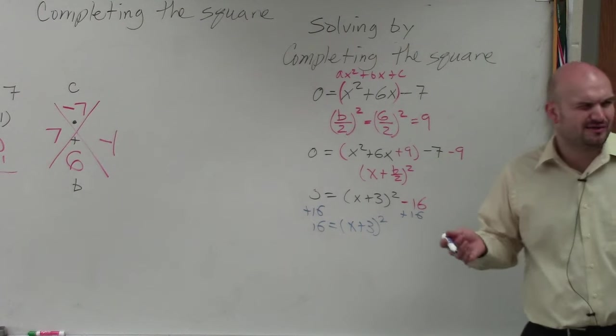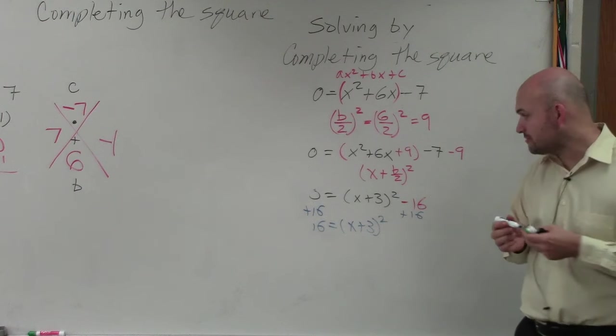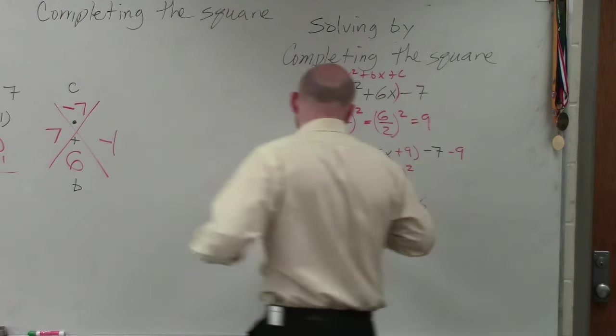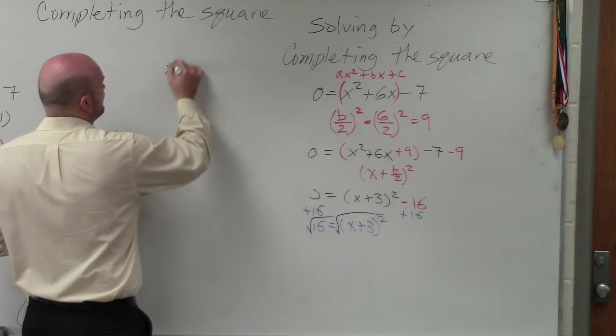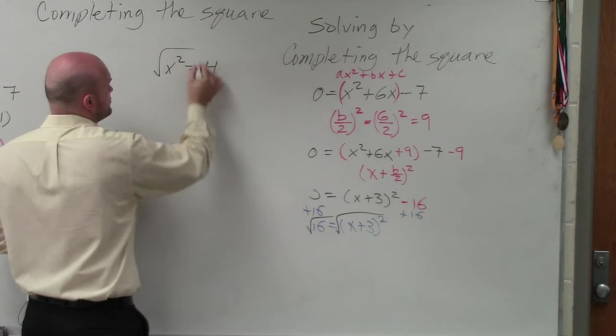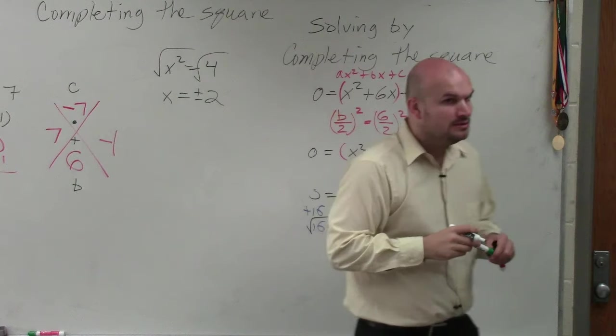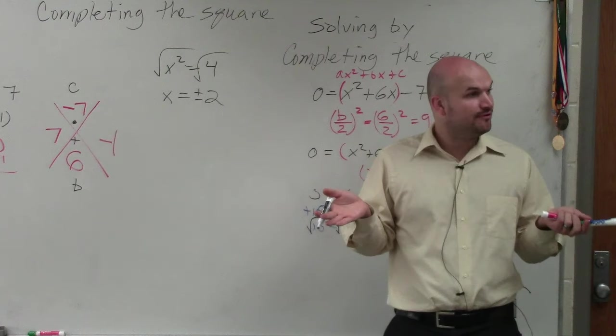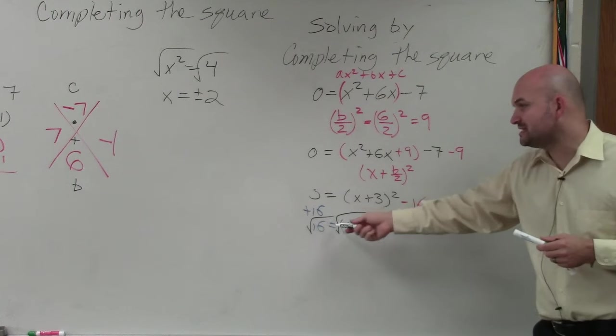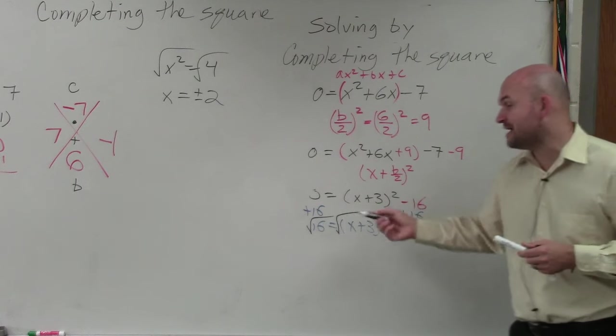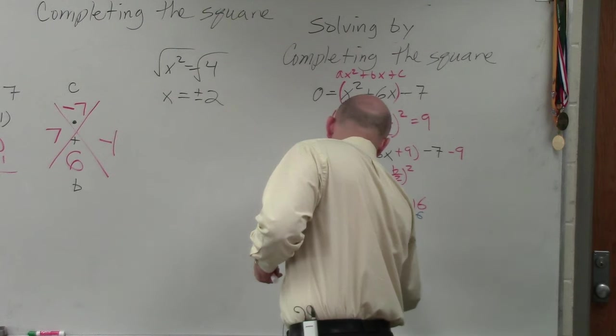By using the reverse order of operations, I need to undo the squaring. So does anybody have any idea how you'd undo squaring something? You have to take the square root, absolutely. So you take the square root. But the thing that we need to remember about taking the square root is whenever you introduce the square root, for instance, if I have x squared equals 4, and I take the square root of both sides, x equals plus or minus 2. You guys agree with me? Because negative 2 squared could be 4, and 2 squared could be 4. So whenever we introduce the square root to solve a problem, we have to make sure we take the plus and the minus.